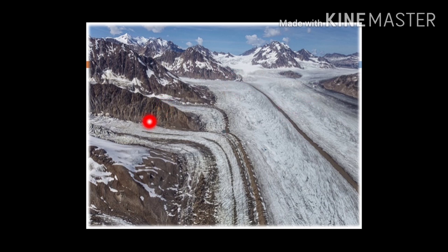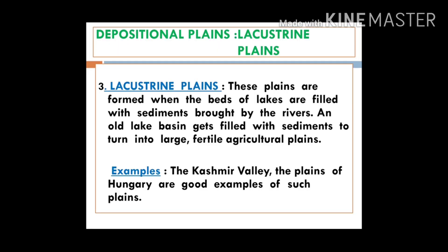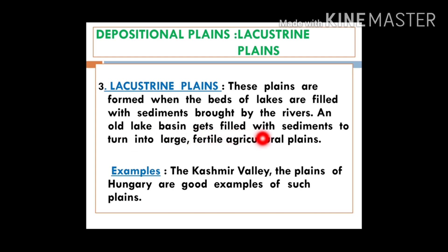This is how glaciers melt — they melt and deposit the sediments. Now the third in the list is the lacustrine plain. The word 'lacustrine' is related to lakes. These plains are formed when the beds of lakes are filled with sediments brought by rivers, and an old lake basin gets filled with sediments to turn into a large, fertile agricultural plain.